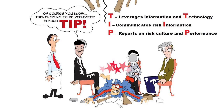The T in TIP is technology — leverage IT. The I is communicate that risk information. And then the P in TIP reports on risk culture and performance. So GoPro — the doves are going to soar because they got a little vapor, and then SIR, please give me a tip.